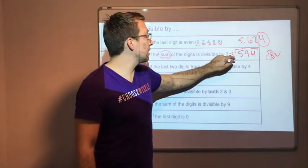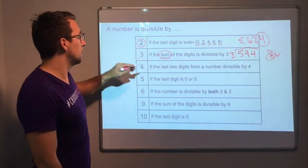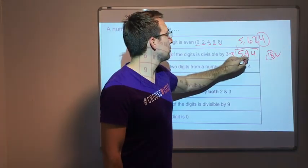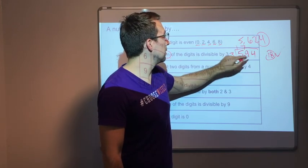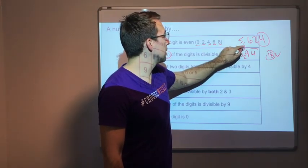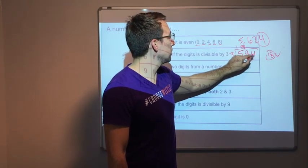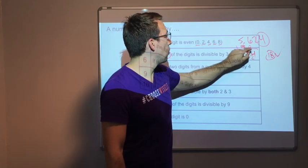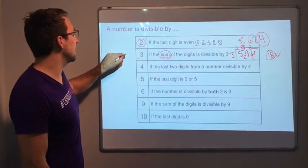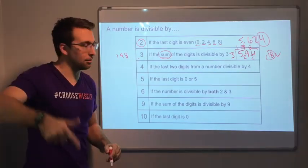Watch. 594 divided by 3 is what? It's 198. 3 times 9 is 27, 24, 8. 198. Check it on your calculators. That's correct.